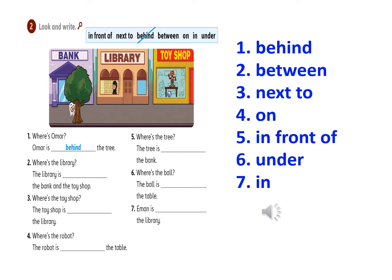Look and write. Number 1: Where is Omar? Omar is behind the tree. Number 2: Where is the library? The library is between the bank and the toy shop. Number 3: Where is the toy shop? The toy shop is next to the library. Number 4: Where is the robot? The robot is on the table. Number 5: Where is the tree? The tree is in front of the bank. Number 6: Where is the ball? The ball is under the table. Number 7: A man is in the library. If you have any mistakes, please correct them.